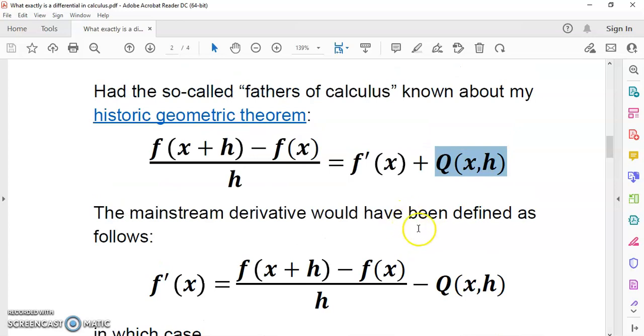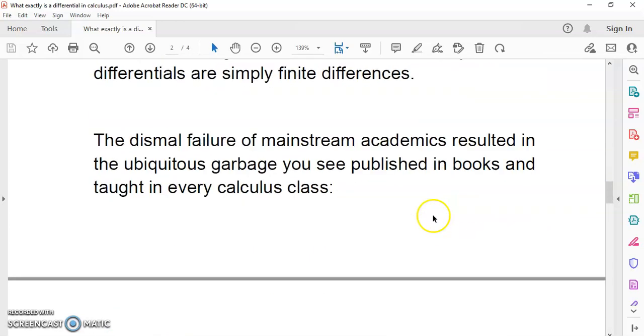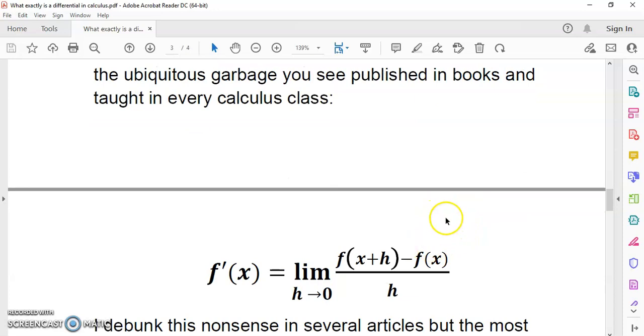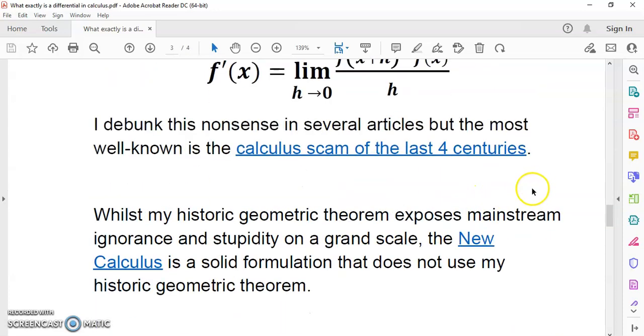And not only are their epsilon-delta proofs so laughable and ridiculous, but you need to have a solid grounding of other bullshit, such as Dedekind cuts and Cauchy sequences somehow defining real numbers. Most of their mathematics is not really mathematics. It's belief in absolute rubbish.